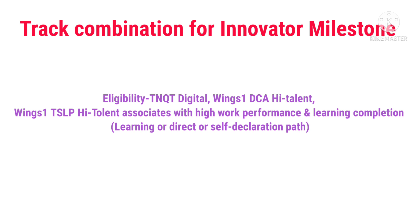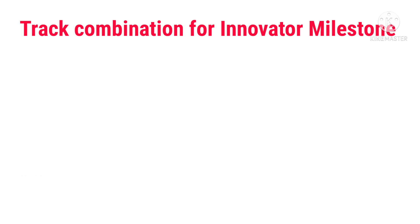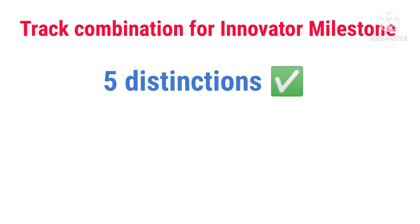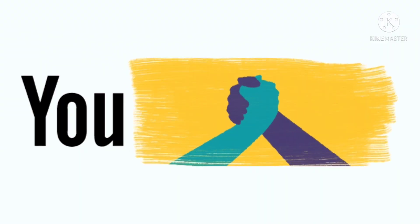Next, the track combination for Innovator Milestone. The eligibility criteria is DCA Proficient — if you previously wrote DCA, try for Innovator. If you are an experienced candidate, your band must be A or B, or your rating must be four or five. In Innovator Coding Challenge, we need five distinctions compulsorily — there is no choice. Mandatory: one distinction for Tech track, three distinctions for Non-tech (Articulation one, Business one, Process one), and one distinction for DCA. Or, if not interested in DCA, choose Unit Electives instead — total five distinctions for Innovator Coding Challenge. I hope you get clarity. Please like, share and subscribe. Bye!